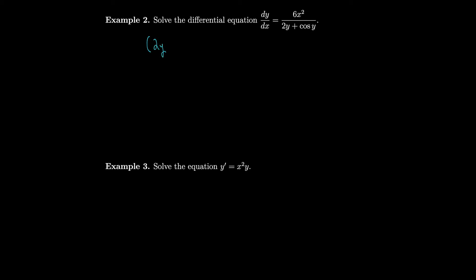Let's solve the differential equation dy/dx equals 6x squared over (2y + cos y). We'll cross-multiply again: we get the integral of (2y + cos y) dy is equal to the integral of 6x squared dx. We integrate both sides.